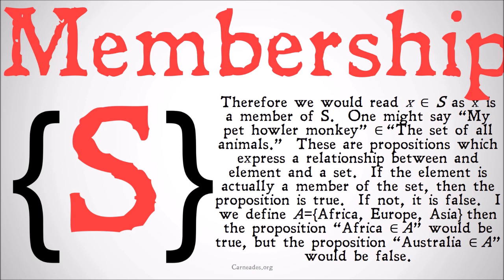If the element is actually a member of the set, then the proposition is true; if not, it's false. If we define A as the set {Africa, Europe, Asia}, then the proposition 'Africa is a member of A' would be true, but the proposition 'Australia is a member of A' would be false.